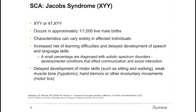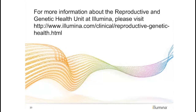Lastly, 47XYY, also known as Jacobs syndrome, is seen in approximately 1 in 1,000 males. There are no distinguishing physical features, but individuals can have some varying developmental and behavioral issues, including motor delays, tics, and autism spectrum disorder. This concludes the first module of Non-Invasive Prenatal Testing: Background, Science, and Clinical Implementation.